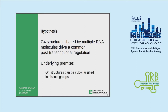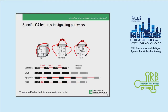The underlying premise is that G4 structures can be subclassified into distinct groups. Rachel in the lab examined three different pathways and observed that G4s within pathway genes share features — for example, in the Wnt/Beta-Catenin pathway, G4s typically have four stacked G-quartets, more than the minimal number of G-tracks required, while the apoptosis pathway tends to have longer loops.